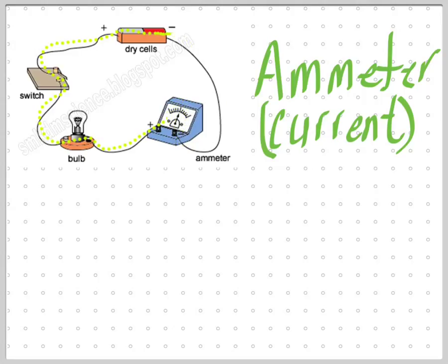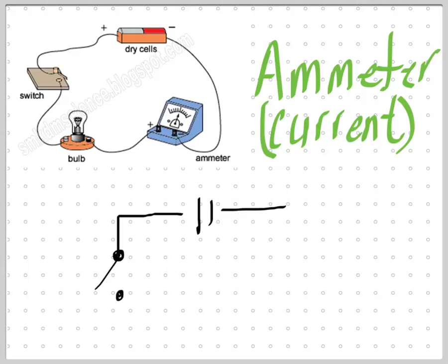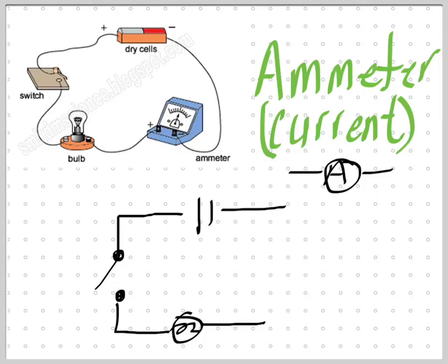So let's see how you would draw this. I have a cell, a switch, a light bulb, and my ammeter. The sign for an ammeter is a circle with an A. Since the ammeter is a part of the circuit, you just draw it in line with the circuit — and that's it.